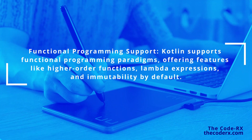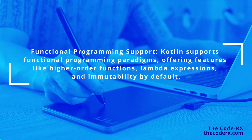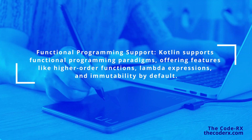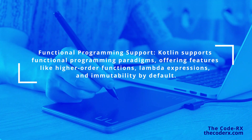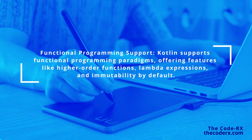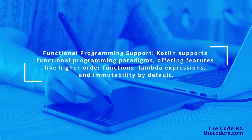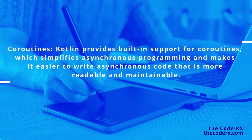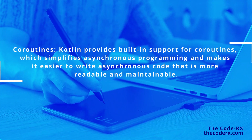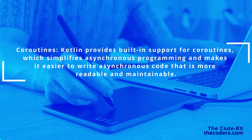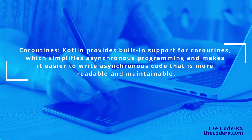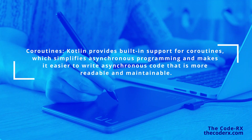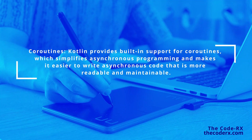Another feature is functional programming support. Kotlin supports functional programming paradigms, offering features like higher-order functions, lambda expressions, and immutability by default. Coroutines is another key feature — Kotlin provides built-in support for coroutines, which simplifies asynchronous programming and makes it easier to write asynchronous code that is more readable and maintainable.